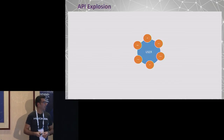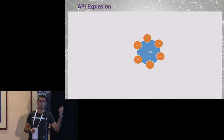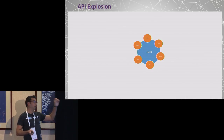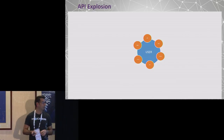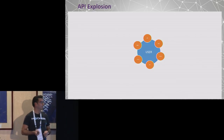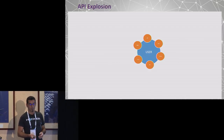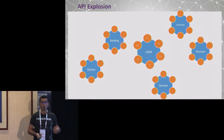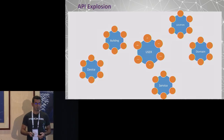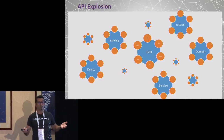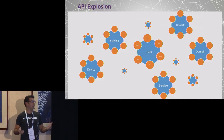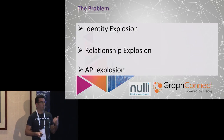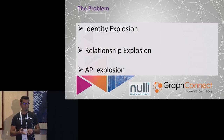The last problem is what I call the API explosion. Every organization nowadays has a bunch of APIs. Every entity type in the graph requires APIs to maintain them — get a user, change a password, and so on. Organizations may have hundreds or even thousands of APIs. So the problem is: identity explosion, relationship explosion, and API explosion. What can we do?